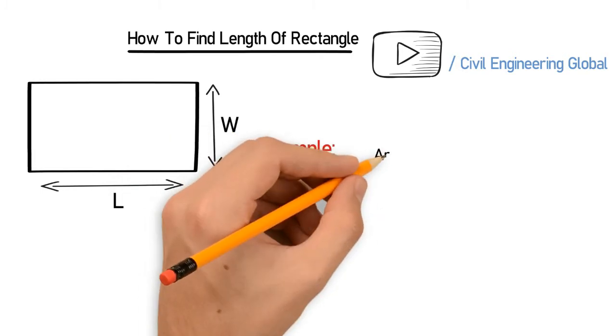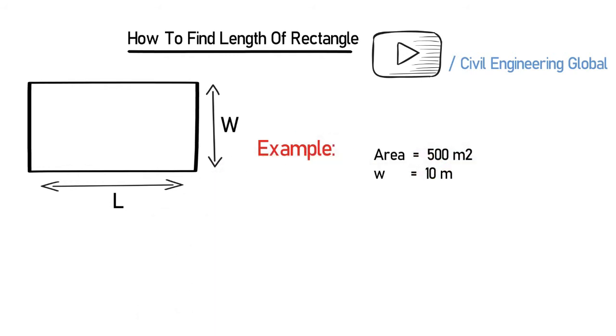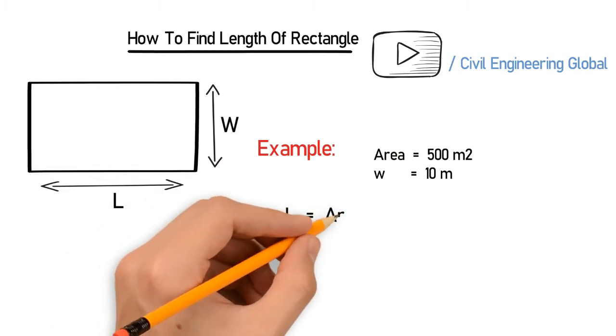Width is equal to 10 meter. To calculate the length, we have the formula: length is equal to area divided by width.